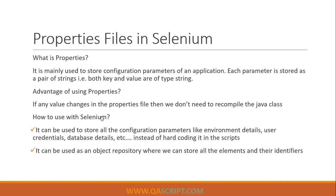Now how can we use this in our Selenium automation framework? There are lots of different configuration parameters which you'll be using in your framework. Some examples could be environment details, user credentials, and database details. Instead of hard-coding these in the scripts, make it reusable — keep them in the properties file. If these values are repeatedly used at different places of your framework and you want to change something like the database URL, you just change it in the properties file and it will be used across your framework.